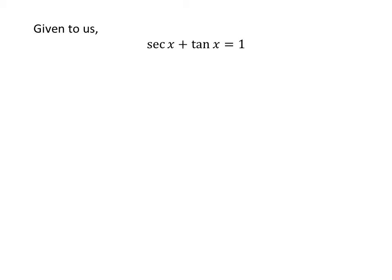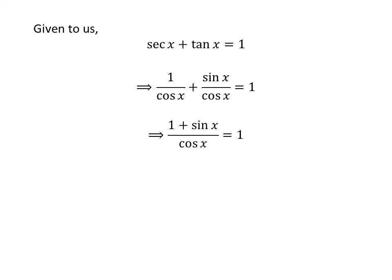We are given secant of x plus tangent of x is equal to 1. We know secant of x is equal to 1 upon cosine of x, and tangent of x is equal to sine of x upon cosine of x. So we can rewrite the equation as 1 upon cosine of x plus sine of x upon cosine of x is equal to 1. As cosine of x is the common denominator of both fractions, addition gives us 1 plus sine of x upon cosine of x is equal to 1.